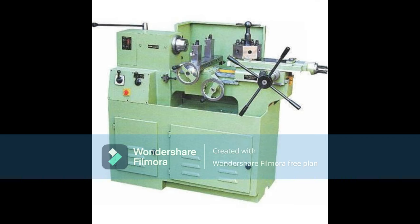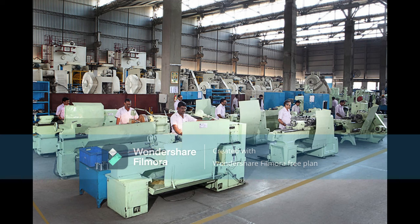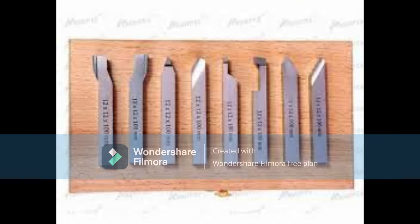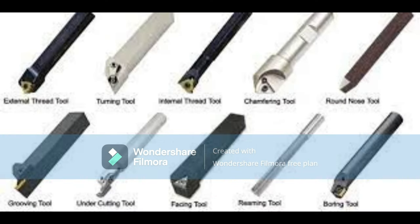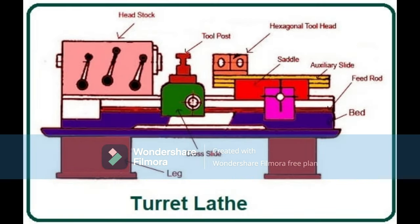A turret lathe is a specialized type of lathe machine used for high-speed, high-volume production work. They are designed to be highly efficient and capable of performing multiple operations quickly and accurately. The most significant difference between a turret lathe and other lathes is the turret, which holds multiple cutting tools allowing for quick tool changes. The main components include the bed, headstock, tailstock, cutting tool, carriage, cross slide, lead screw, and the turret itself, which holds multiple cutting tools for rapid changeover.